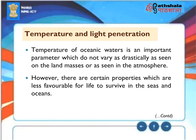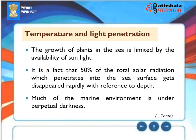Temperature and Light Penetration: Temperature of oceanic waters is an important parameter which does not vary as drastically as seen on the land masses or as seen in the atmosphere. However, there are certain properties which are less favorable for life to survive in the seas and oceans. The growth of plants in the sea is limited by the availability of sunlight. 50% of the total solar radiation which penetrates into the sea surface gets disappeared rapidly with reference to depth. Much of the marine environment is under perpetual darkness.